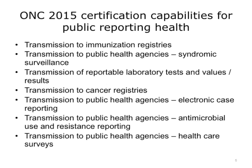ONC-2015 certified systems can be certified to have the following public health capabilities: Transmission to immunization registries; Transmission to public health agencies Syndromic surveillance; Transmission of reportable laboratory tests and values results; Transmission to cancer registries; Transmission to public health agencies Electronic case reporting; Transmission to public health agencies Antimicrobial use and resistance reporting; and Transmission to public health agencies Healthcare surveys. Each of these has interoperability standards associated with them, with the exception of electronic case reporting. Let's look at the rest of the certified capabilities for ONC-2014 and 2015 and observe the standards required.